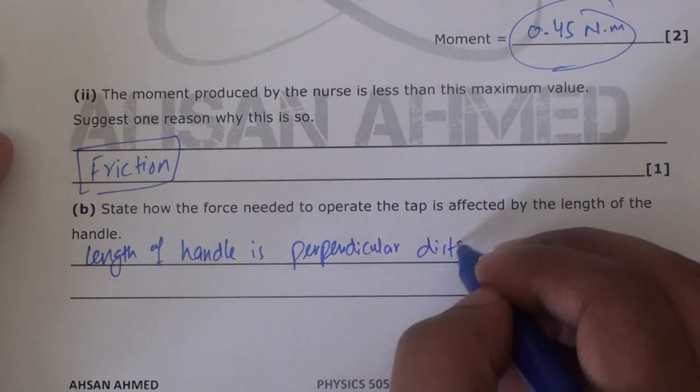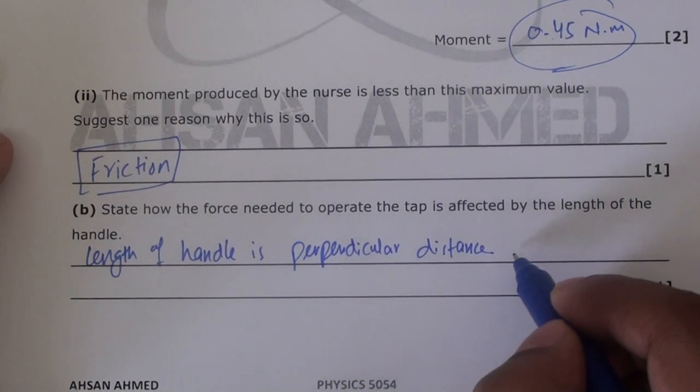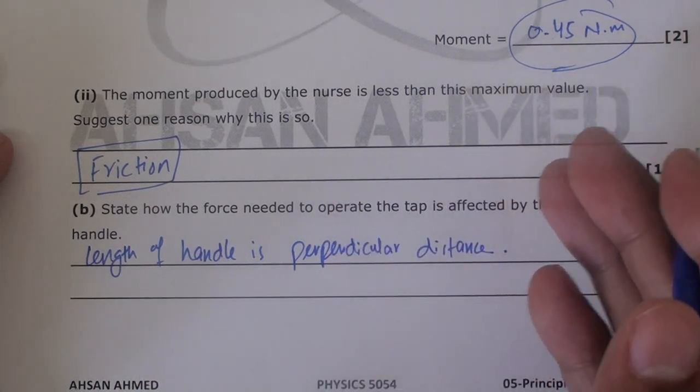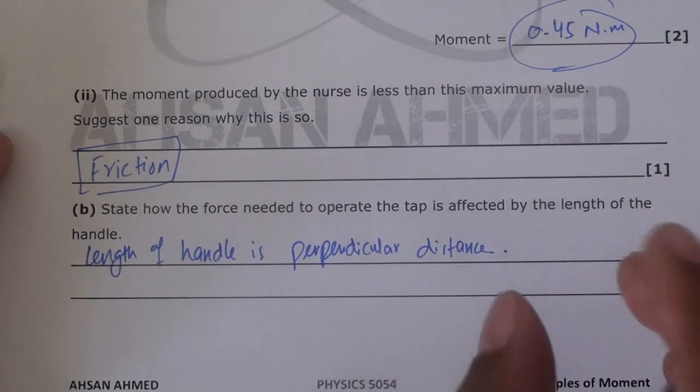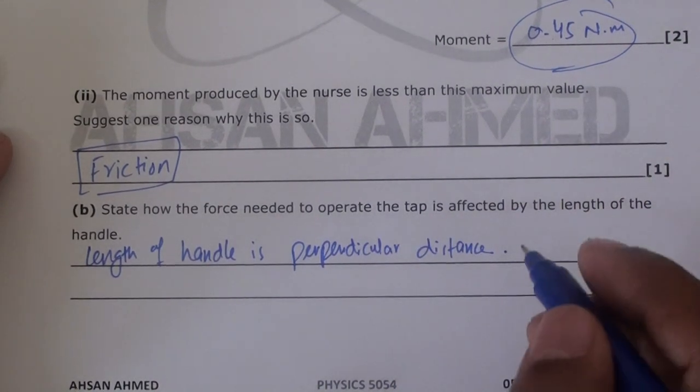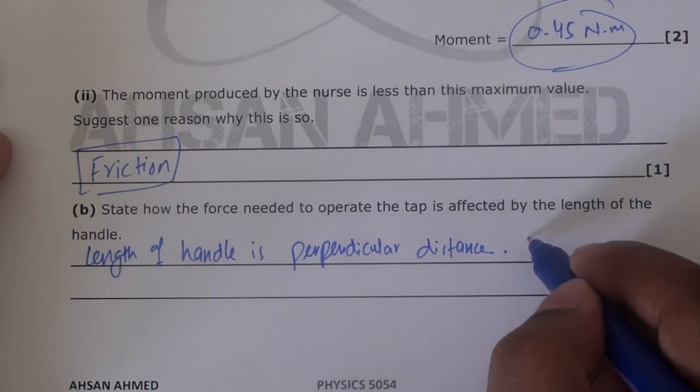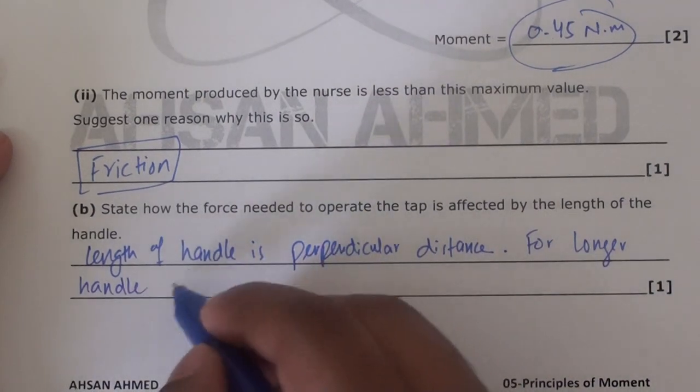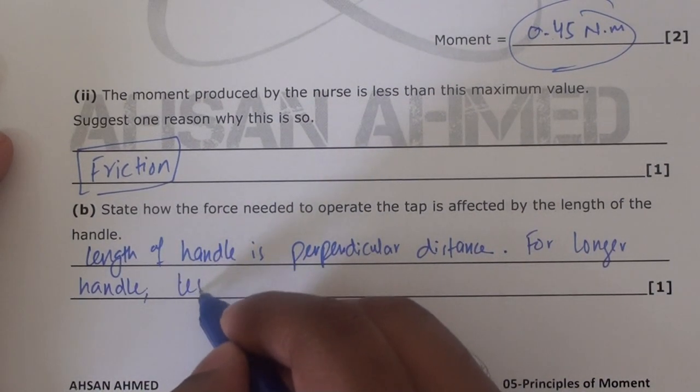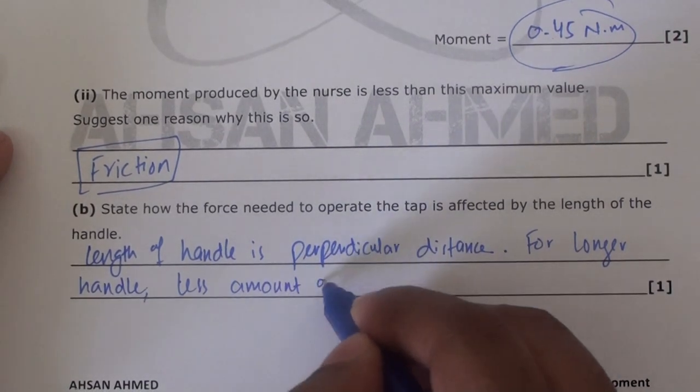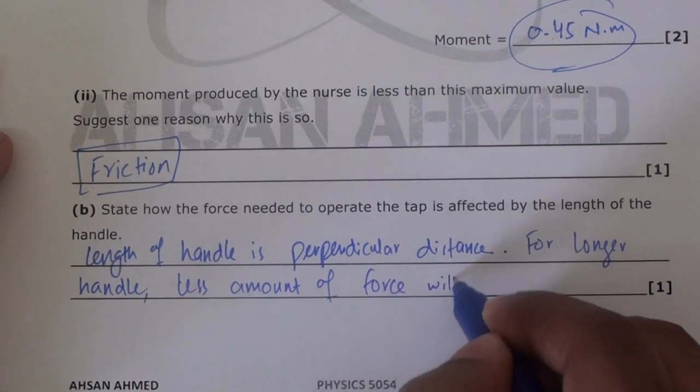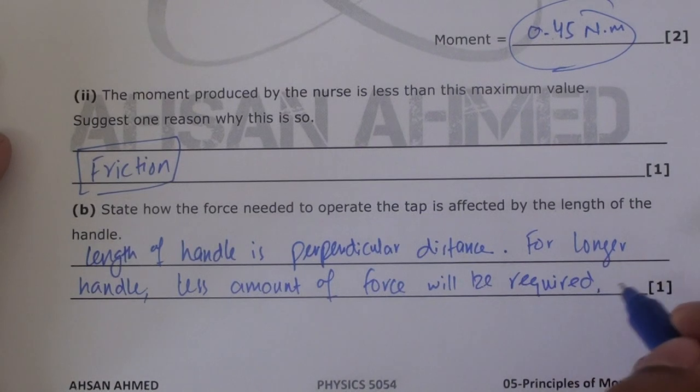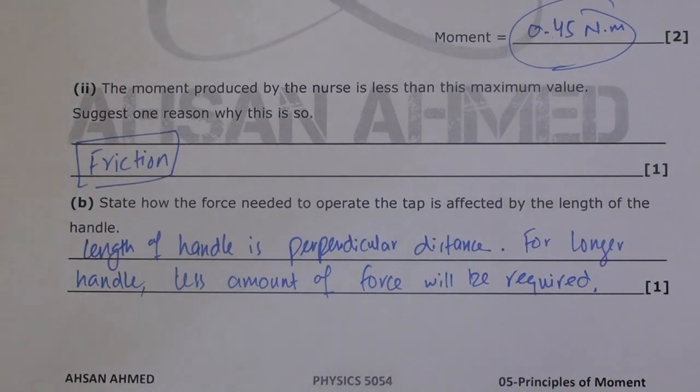Now we know that if perpendicular distance is larger, then moment produced will also be larger for the same amount of force. But if you require the same moment, then for a longer handle, less amount of force will be required to produce the same moment. Right? But you don't need to write that. Okay, I hope that's clear.